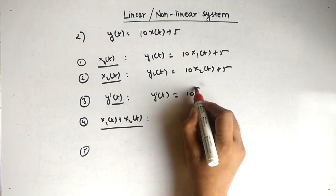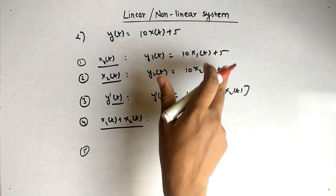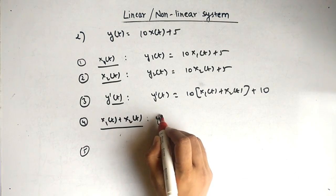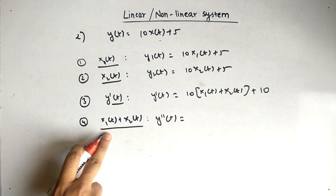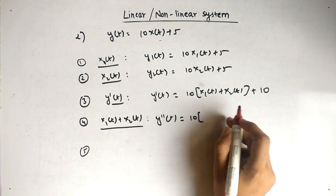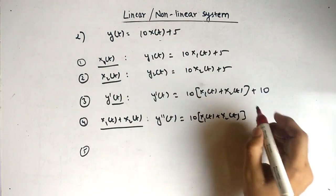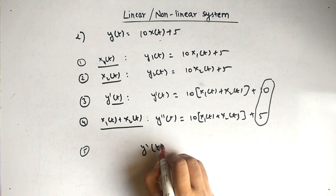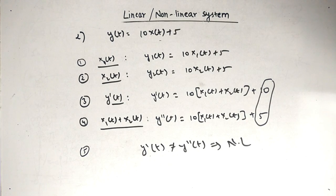Adding y1 and y2: we get 10 common inside the bracket, and the two constant 5s add to give plus 10. For y-double-dash of t, input is x1 of t plus x2 of t: we get 10 times the bracket x1 of t plus x2 of t, but only plus 5. You can see the difference — y-dash of t is not equal to y-double-dash of t. This means the system is nonlinear.